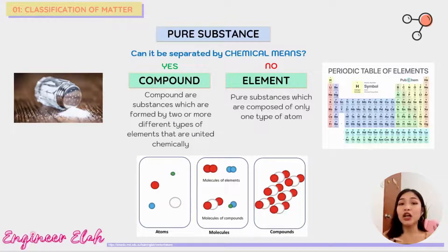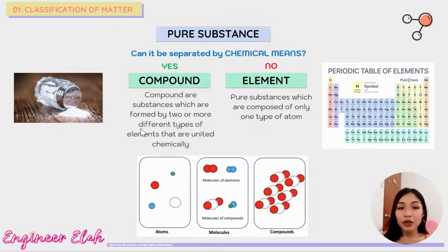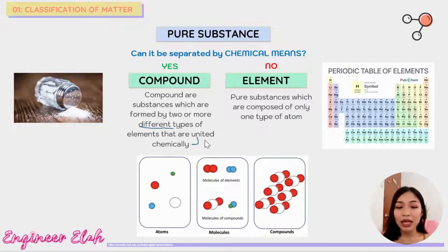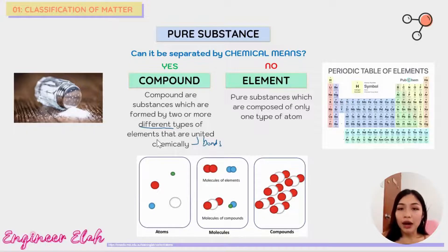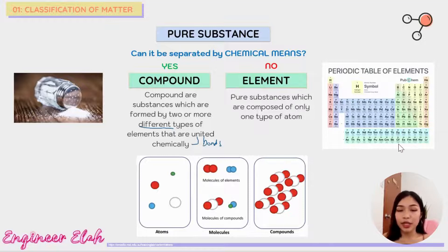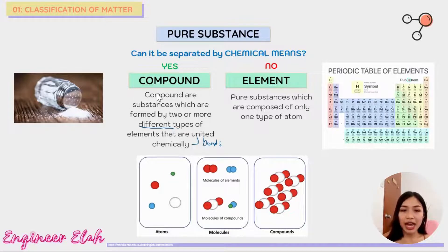For example, water can undergo electrolysis to separate its hydrogen and oxygen atoms. So if it can be separated chemically, then it is a compound; if not, then it is an element. By definition, compounds are substances formed by two or more different types of elements that are united chemically — meaning they have chemical bonds. If not, then it is considered an element — basically everything in the periodic table. If two different elements combine chemically, that is considered a compound.